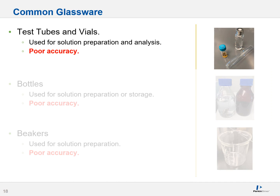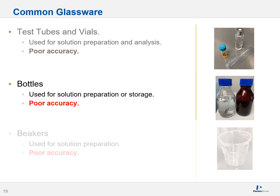You may also encounter test tubes and vials. They come in many shapes and forms and are sometimes made of glass or plastic. They're used for solution preparation and analysis but generally provide poor accuracy at best — they're really storage vessels more than anything else. You will also encounter different types of bottles, such as amber and non-amber bottles, used for solution preparation and storage, but again they provide poor accuracy.